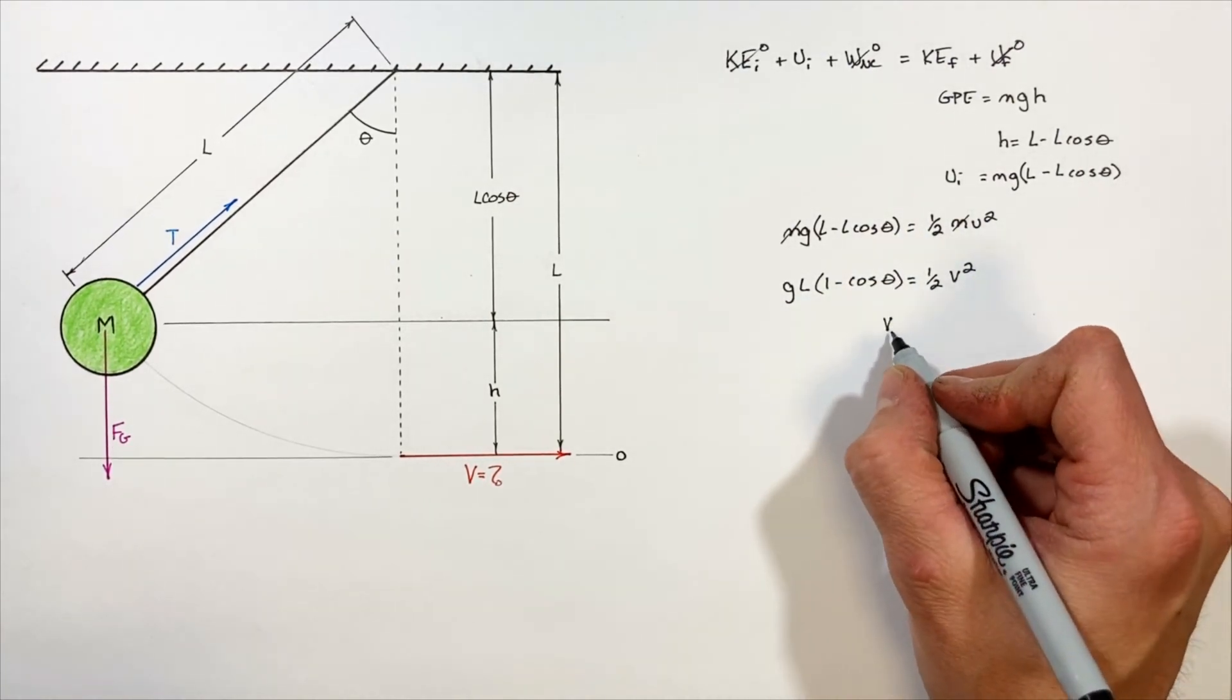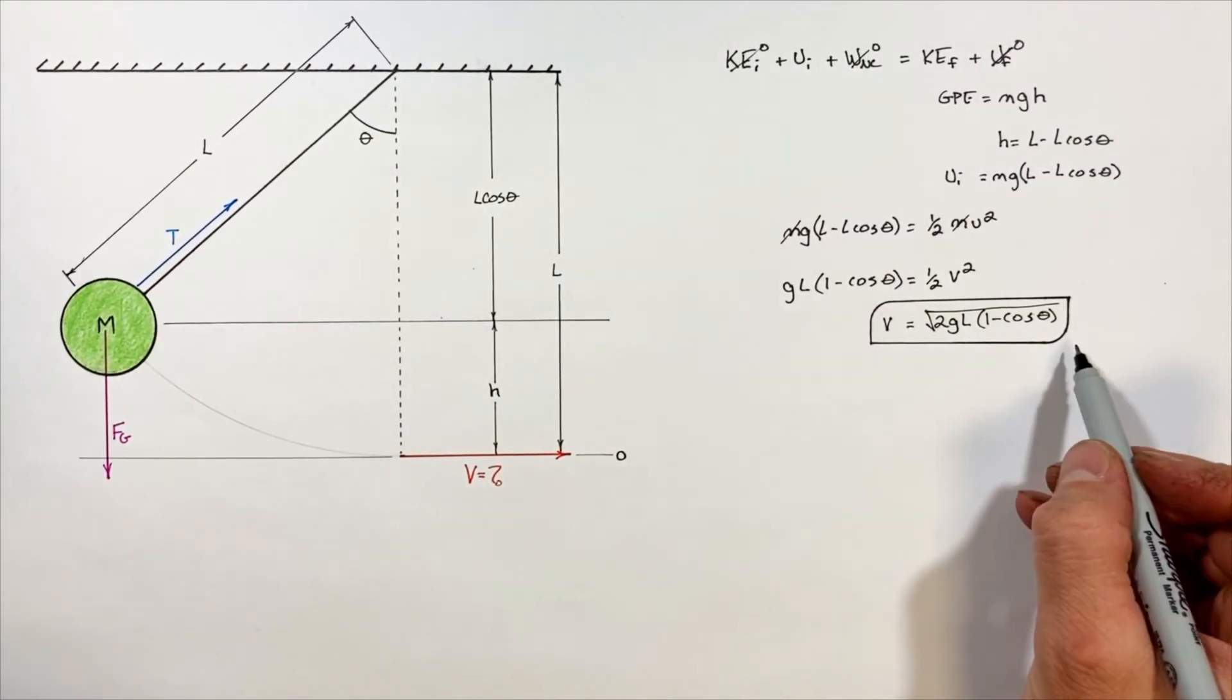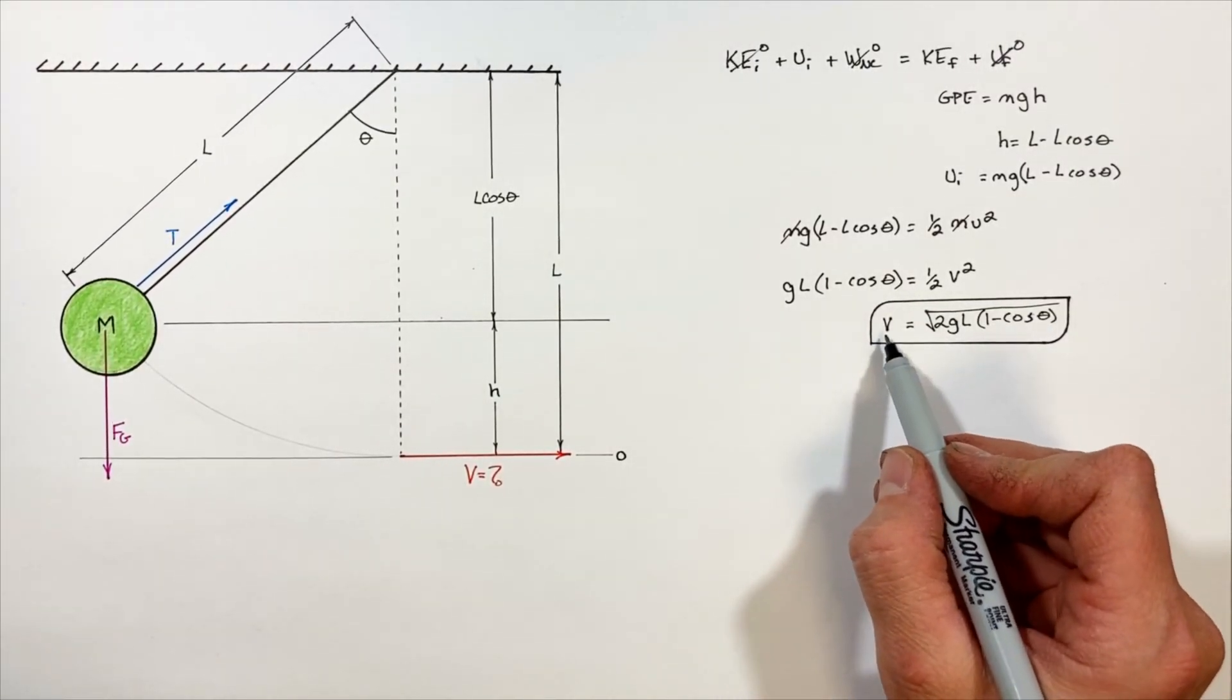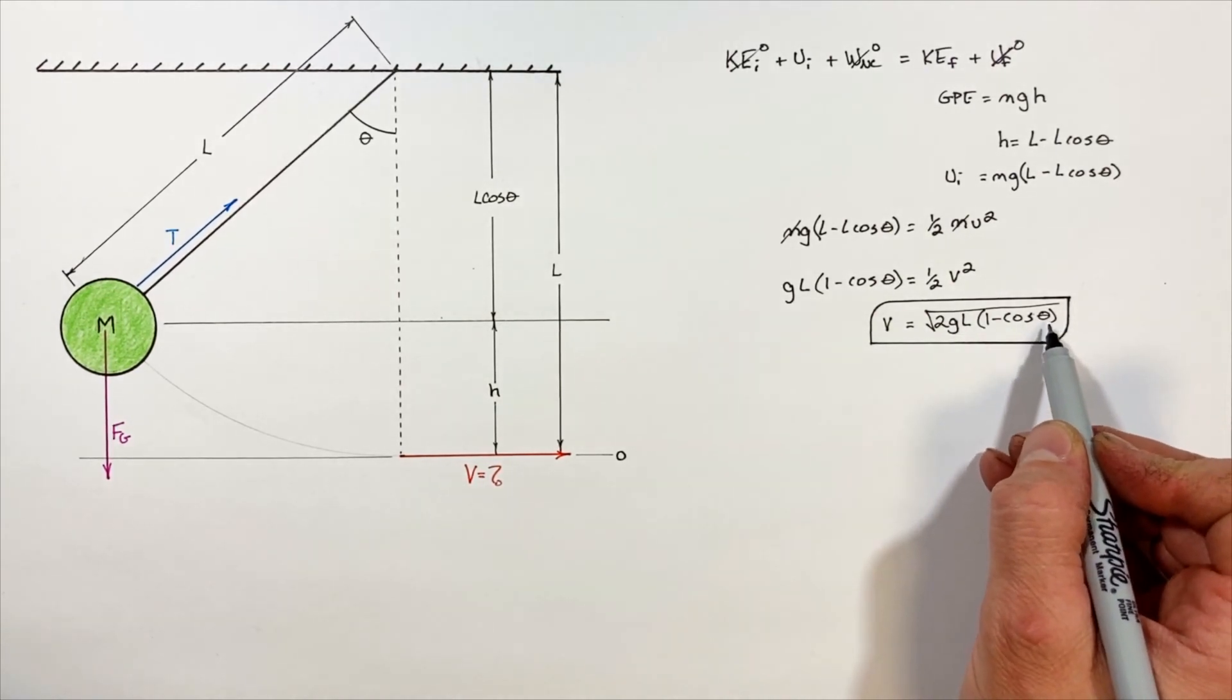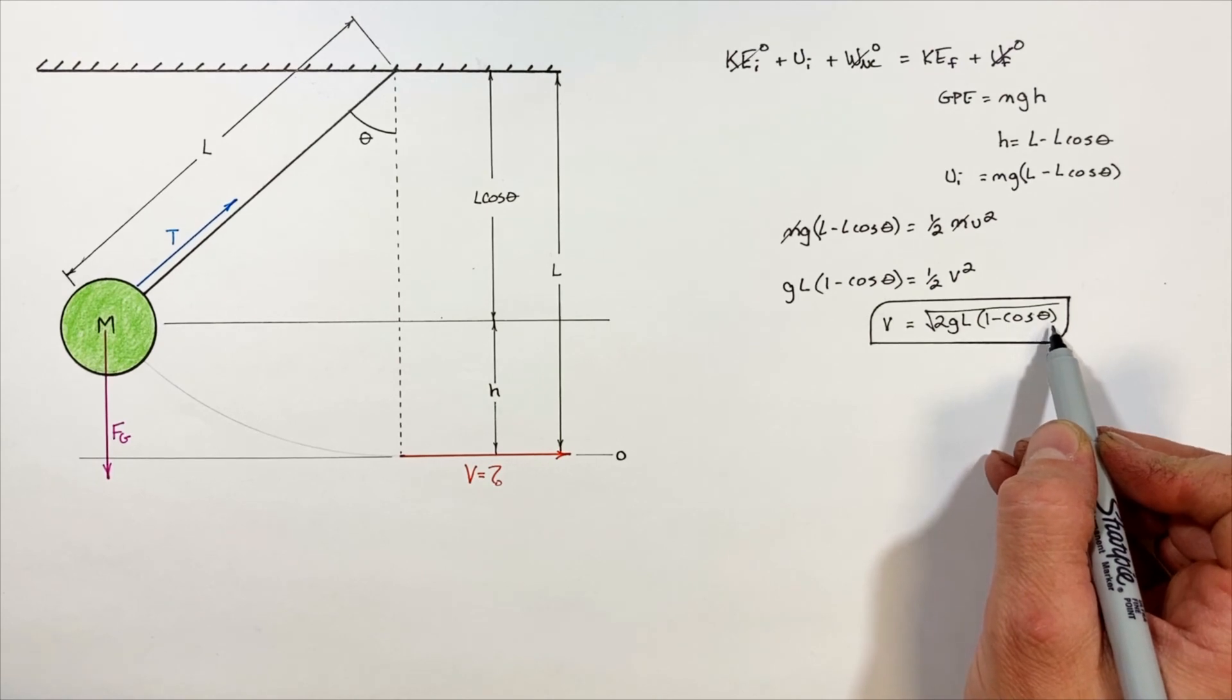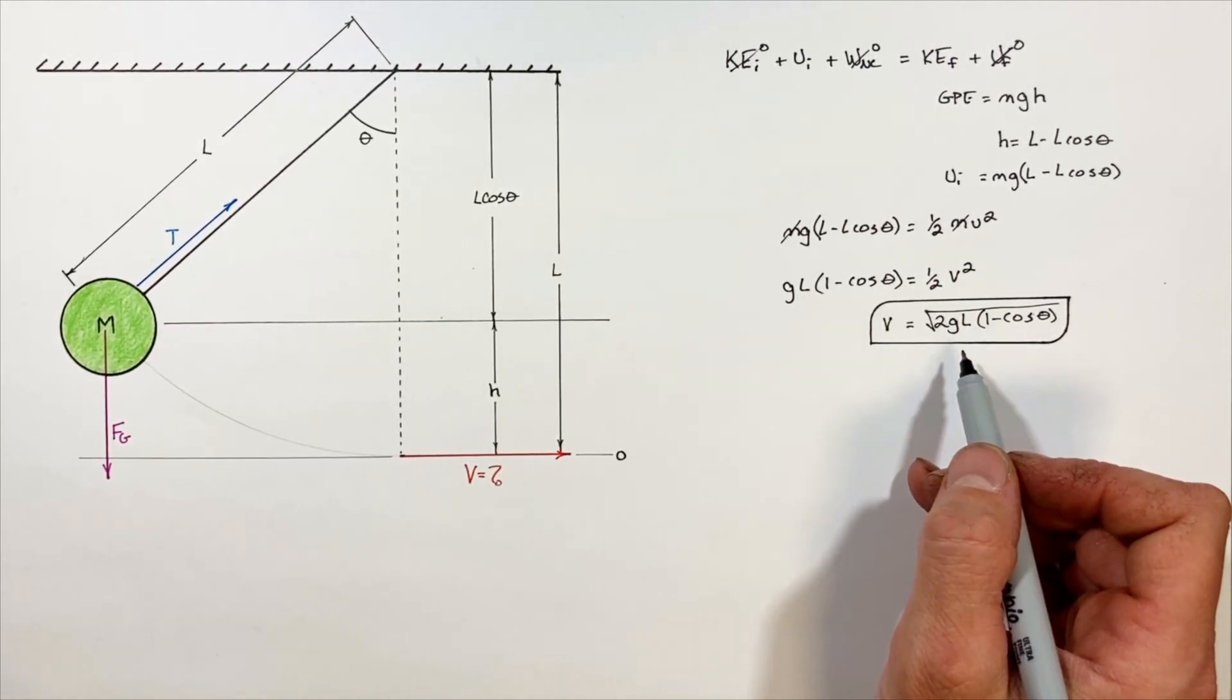We can solve for the final velocity, and we're left with this: an expression which relates the velocity of the mass at its lowest point to the length of the string as well as how far back this mass was pulled before it was released from rest. I hope you found this useful, and on that note, that's all for now.